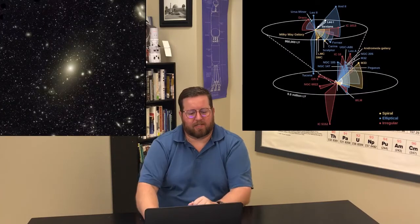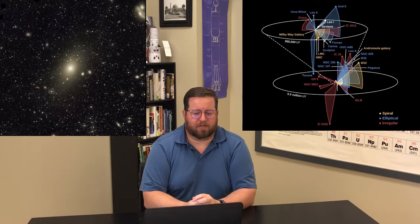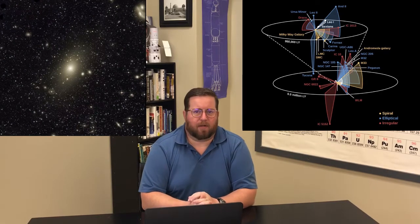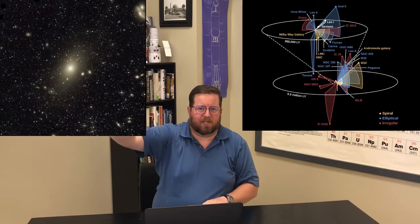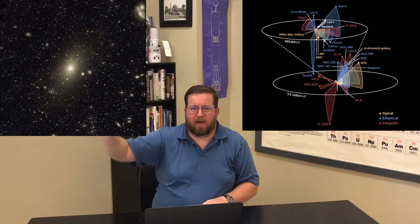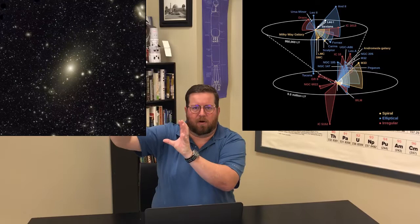A larger clump that contains the local group is called the supercluster, the Virgo supercluster. The Virgo supercluster contains many hundreds of galaxies. If you look towards the constellation Virgo, you see quite a lot of galaxies all clumped together in one place, and we're actually part of that same group.